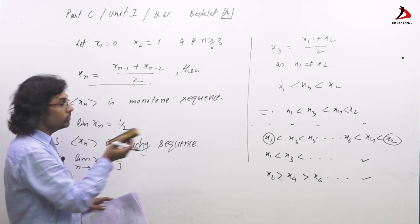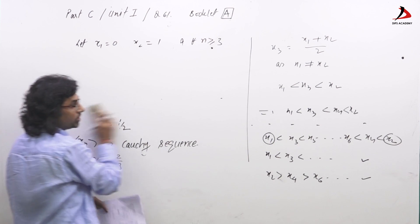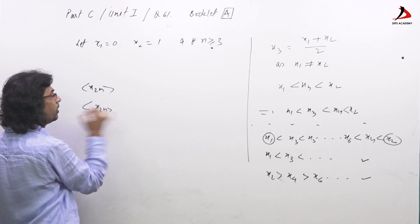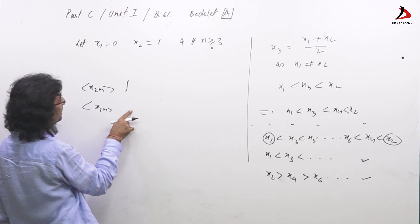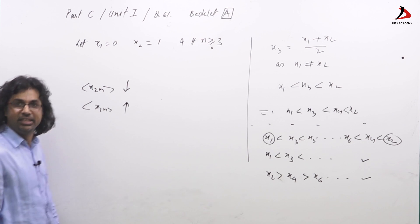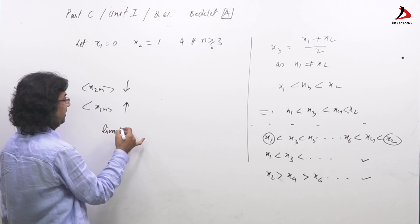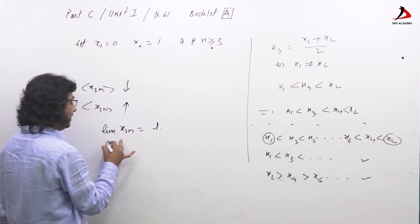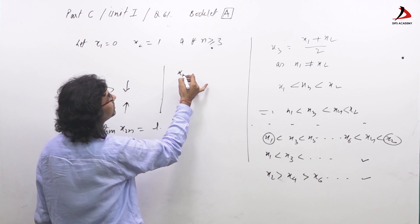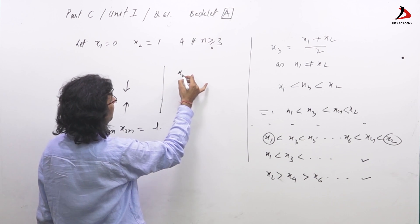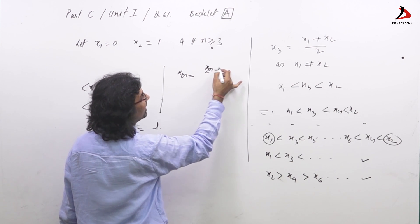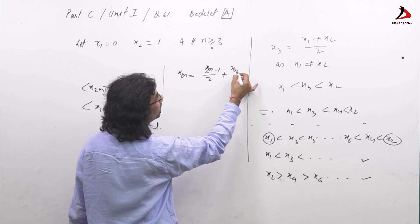We have two complementary subsequences: the odd subsequence is increasing and the even subsequence is decreasing. Let the limit of the even subsequence be l: lim x_{2n} = l, and let the limit of the odd subsequence be l′: lim x_{2n−1} = l′.